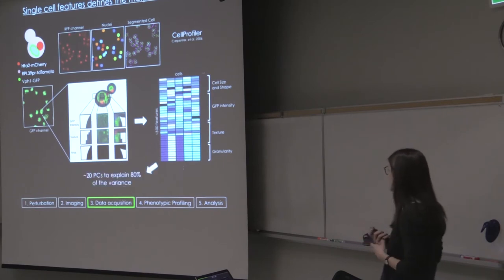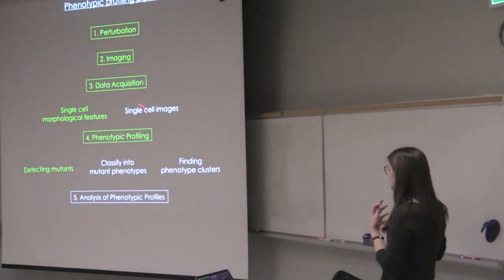For each cell we extract around 300 features. And then with applying PCA, we can then reduce our dimension to explain 80% of the variance in the data. After extracting all of the PCs that are relevant for morphologies, we want to detect the mutants.